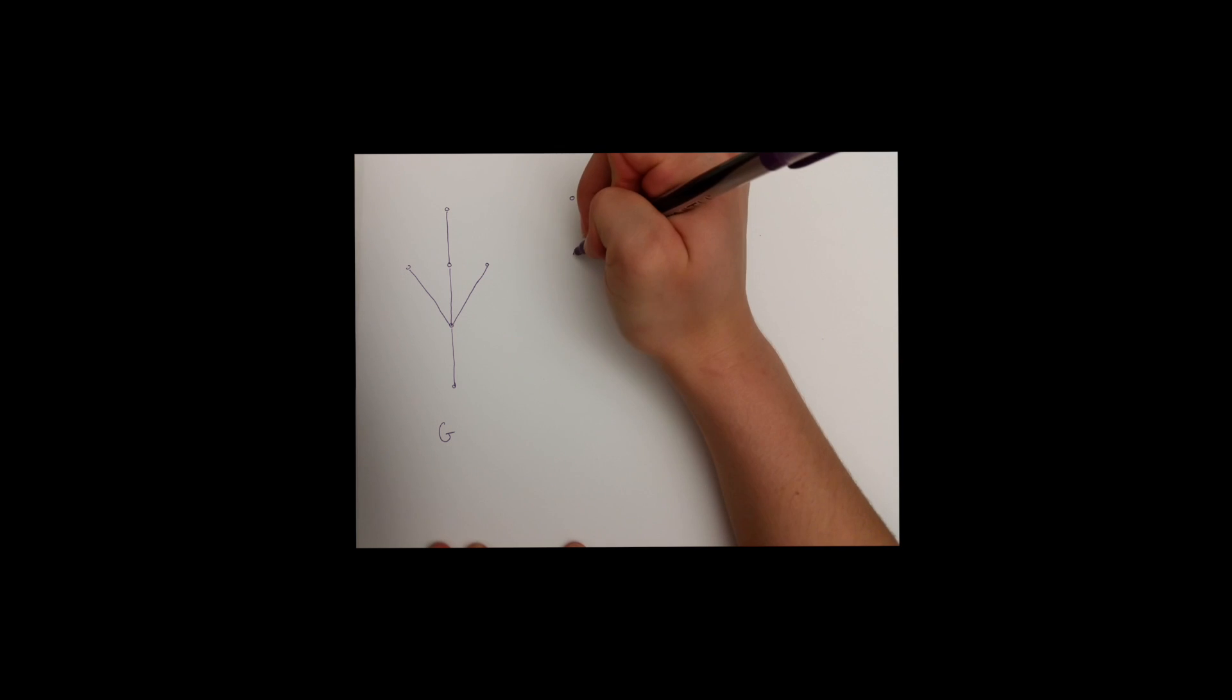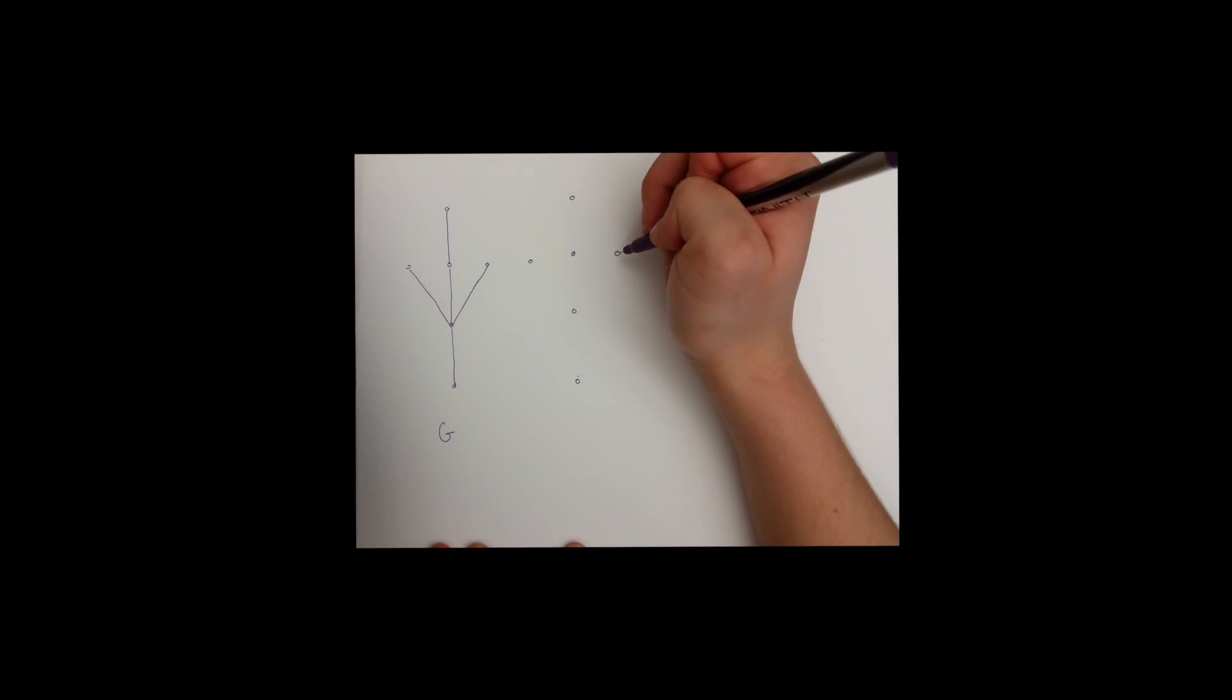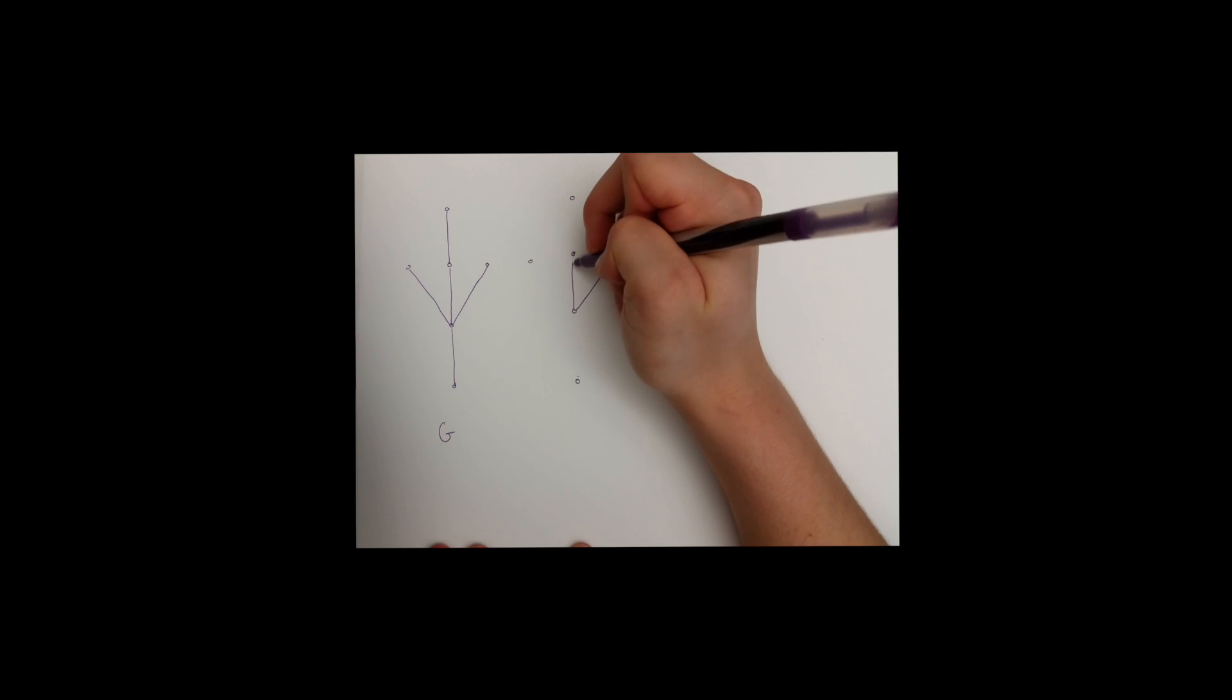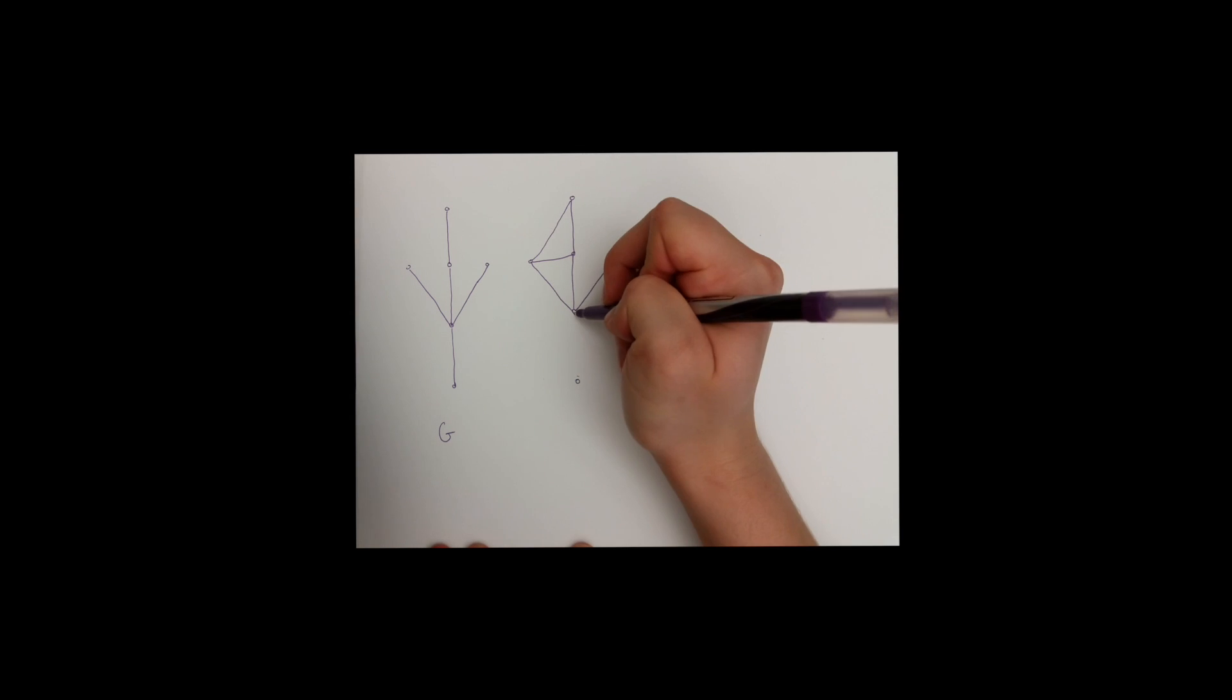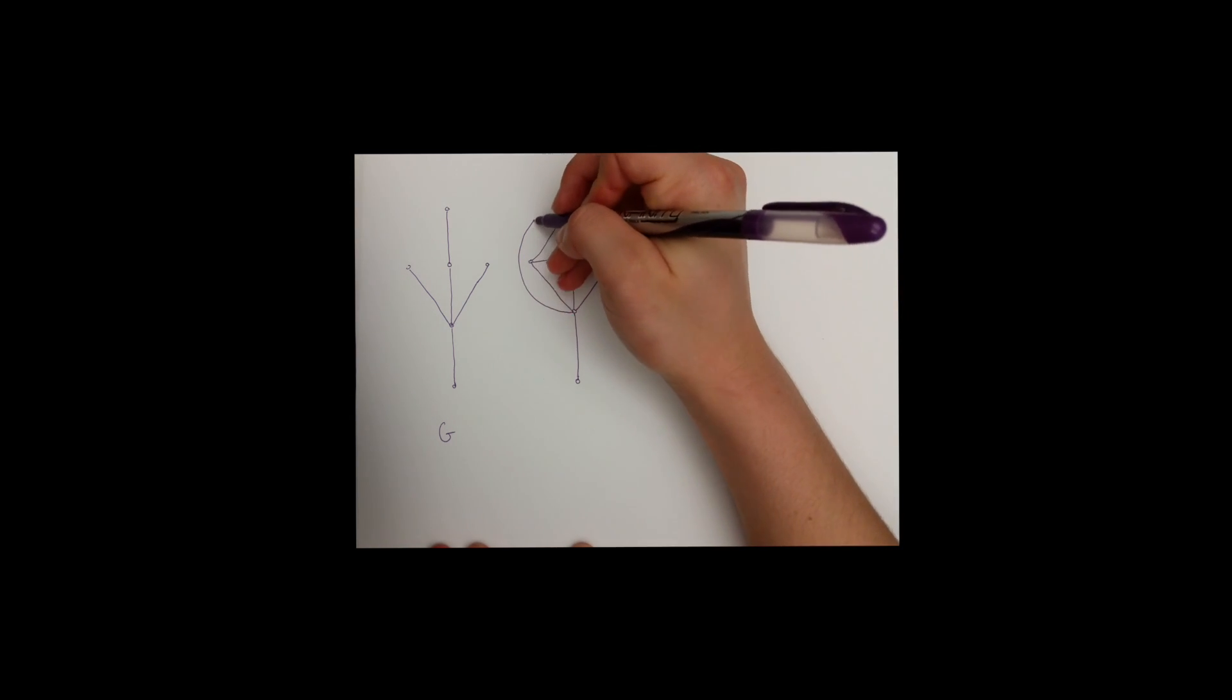Now, let G' be the maximal graph of the vertices of G containing all edges of G and having no one factor. Here, I maximize the graph of G into G prime,